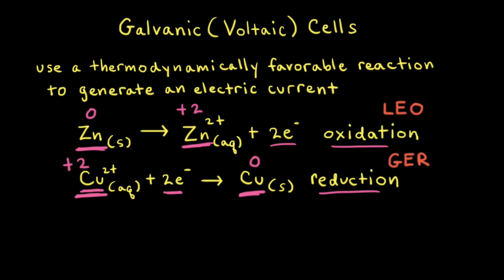A good way to remember which half reaction is which is to think about LEO the lion goes GER: loss of electrons is oxidation, and gain of electrons is reduction.